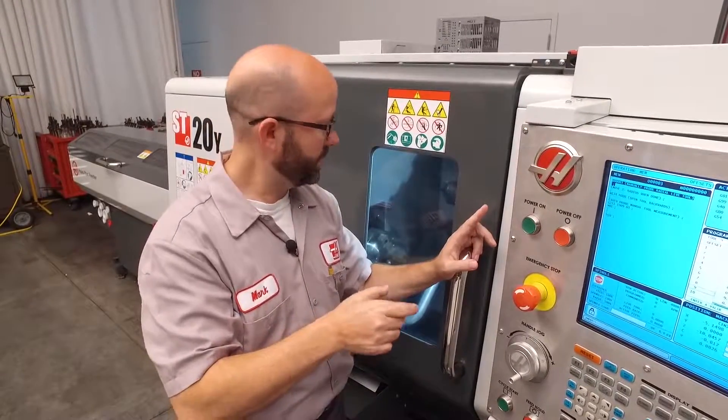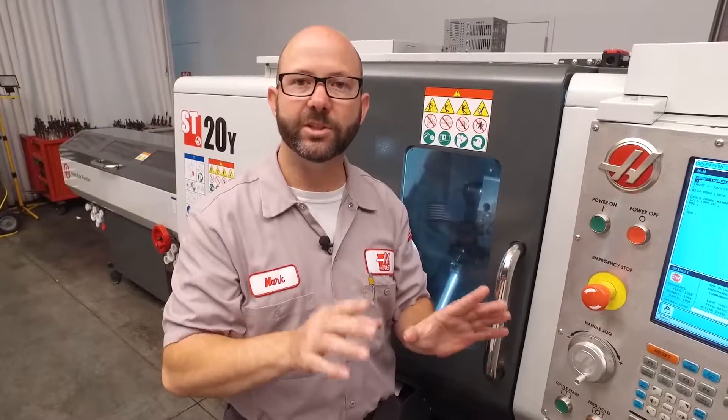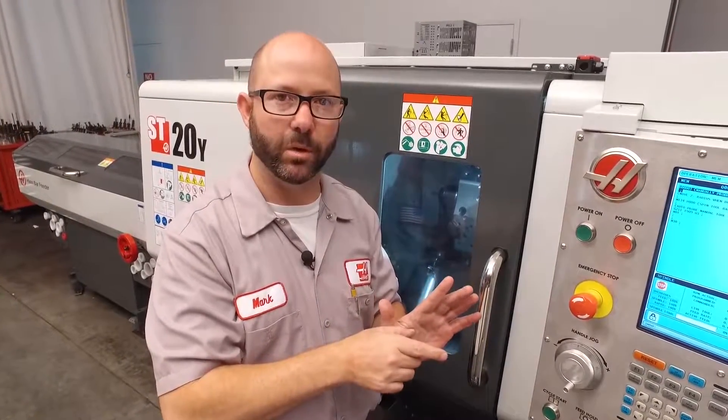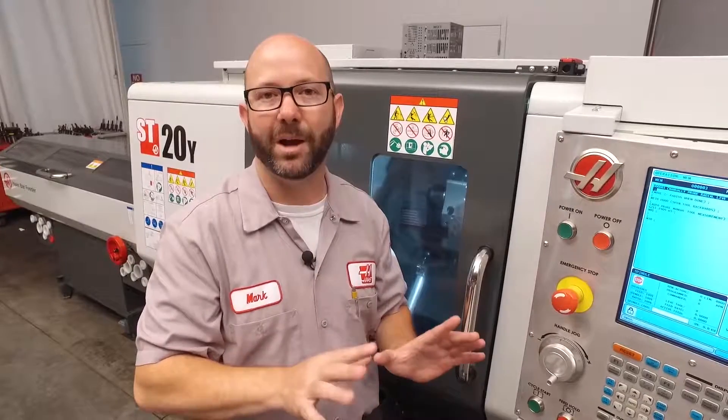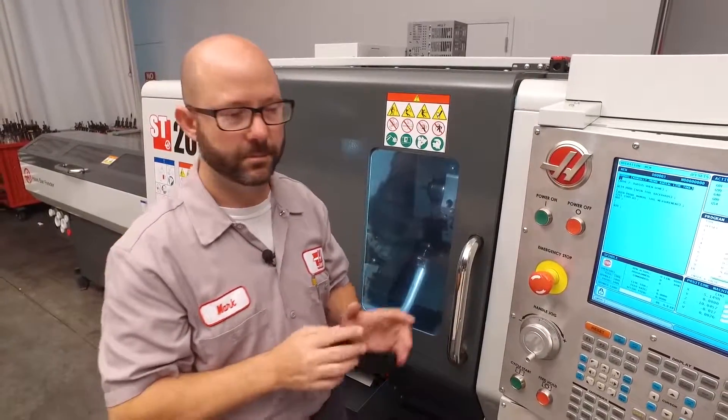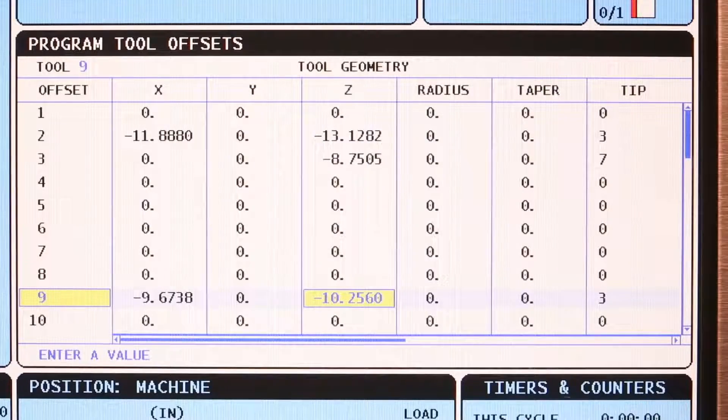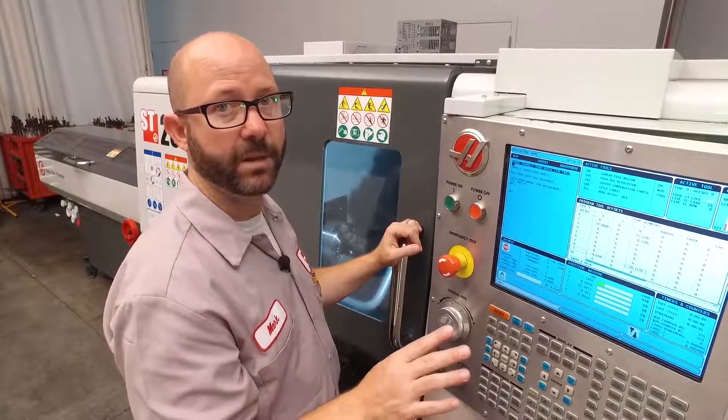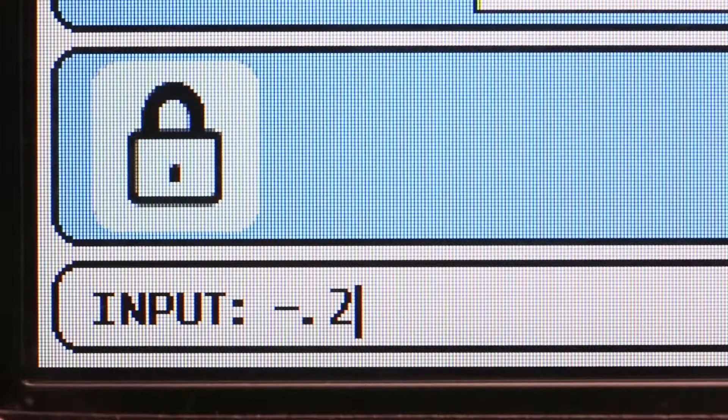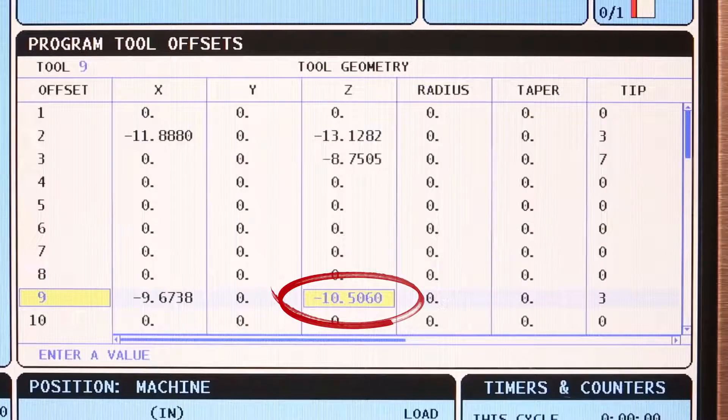But remember we touched off on the OD, the side of the tool, when we really wanted to touch off on the center. But that wasn't possible. So now we need to make an adjustment. We have to subtract the tool radius from our Z tool offset. So I'm going to go to my offset page, highlight tool nine because that's the tool I used. And because I'm using a half inch end mill, I'm going to subtract .25 from my Z tool offset. This is going to put that radial live tool back on center instead of the left edge.